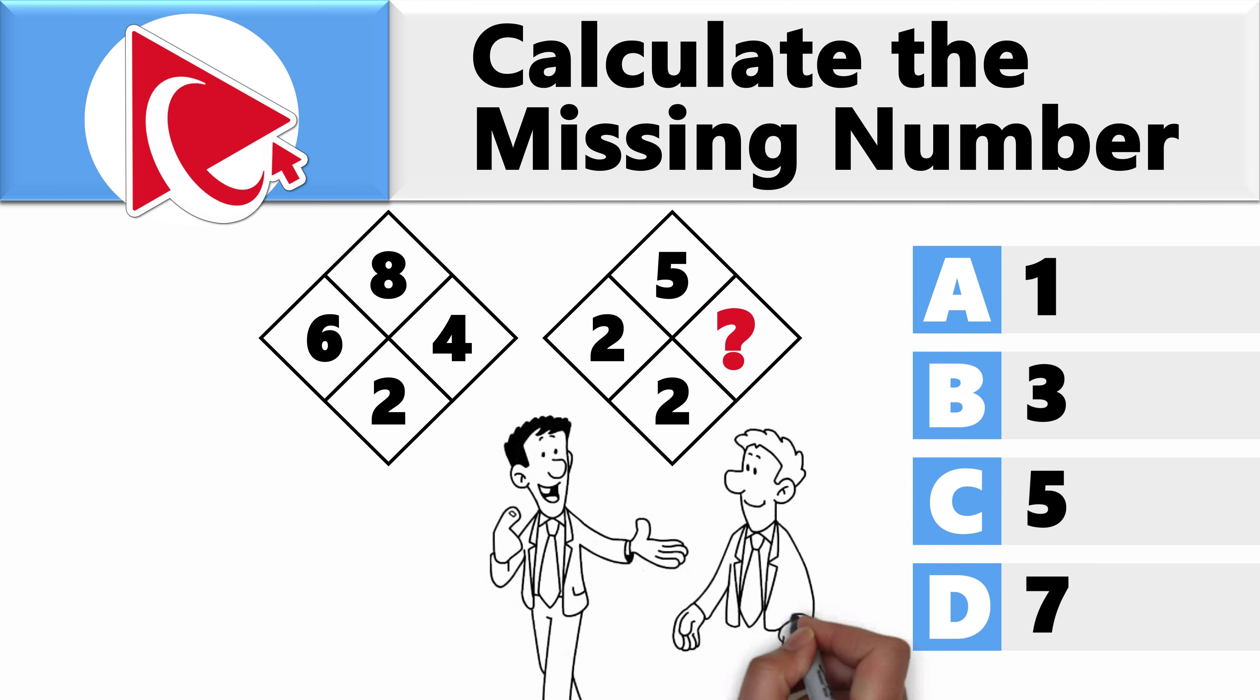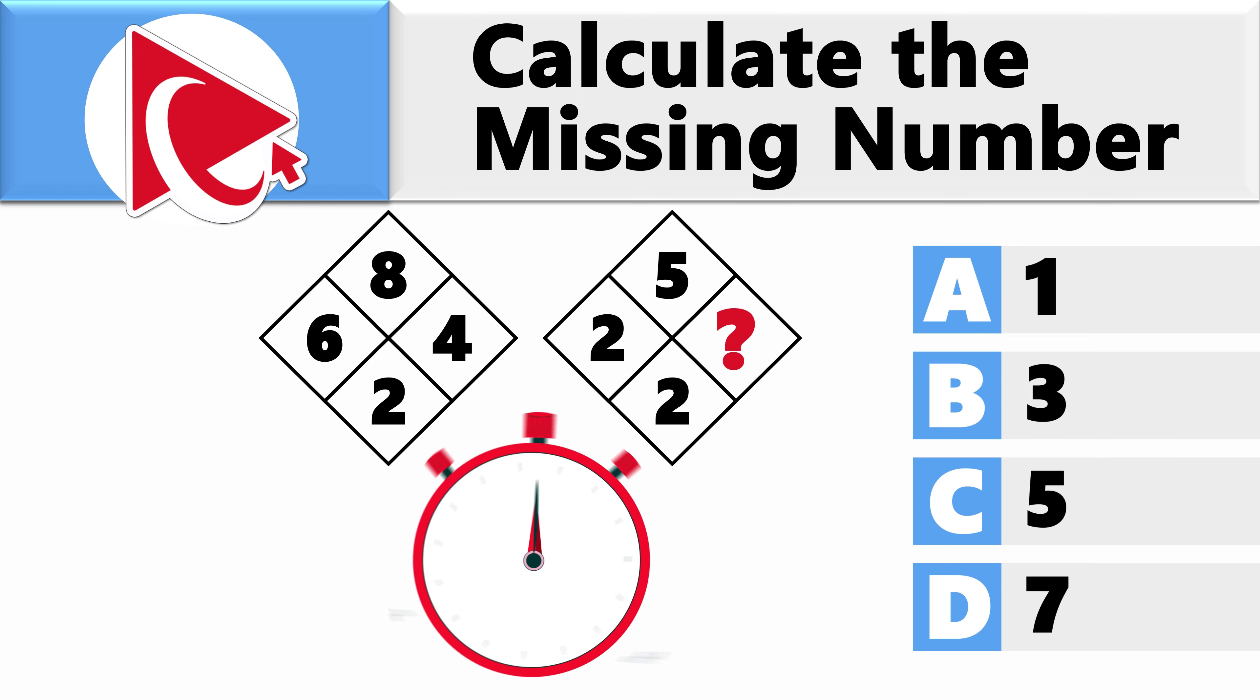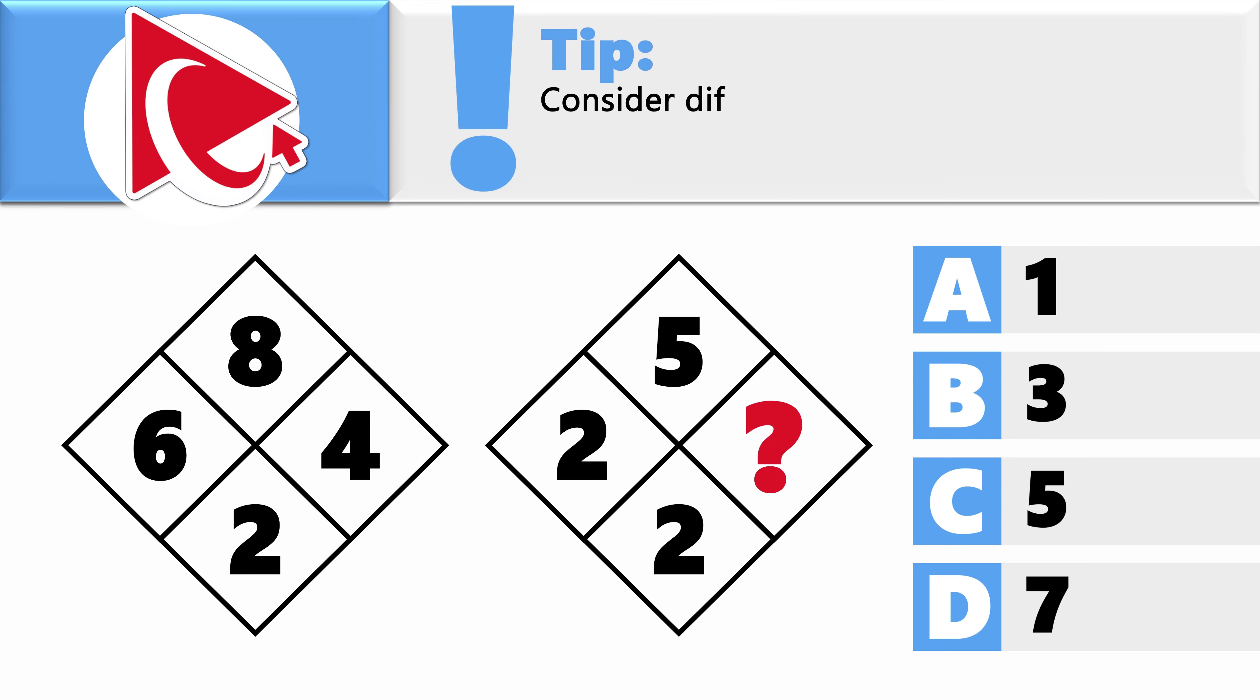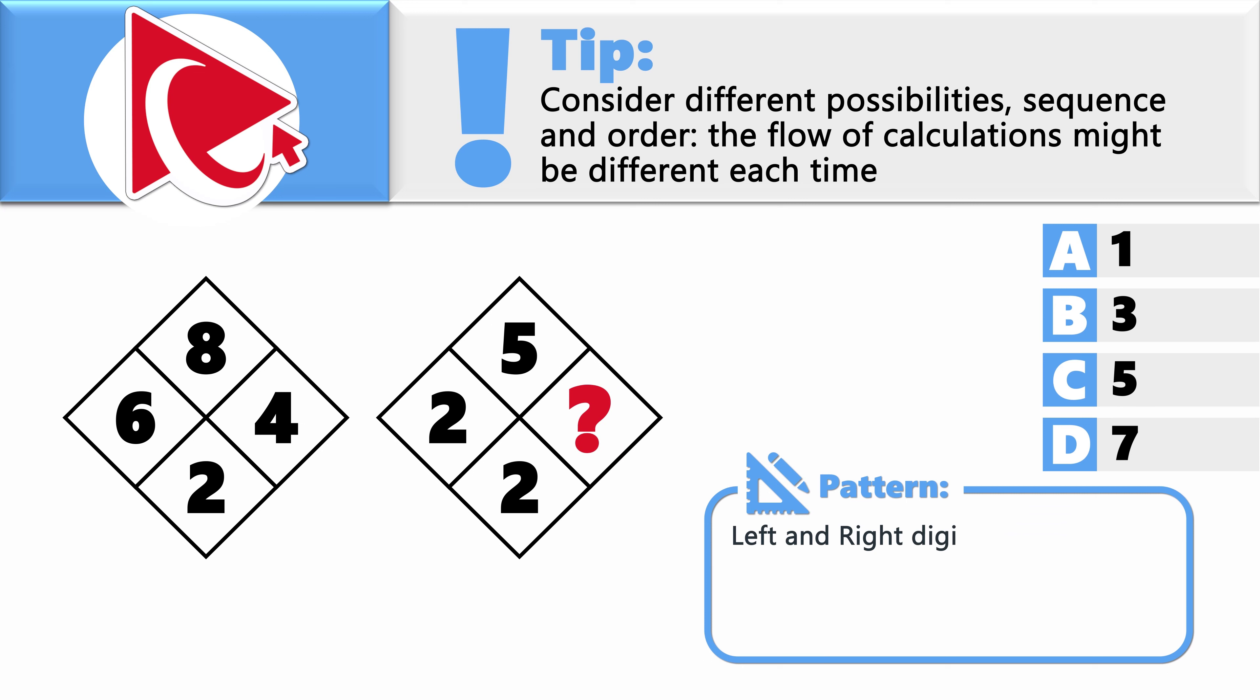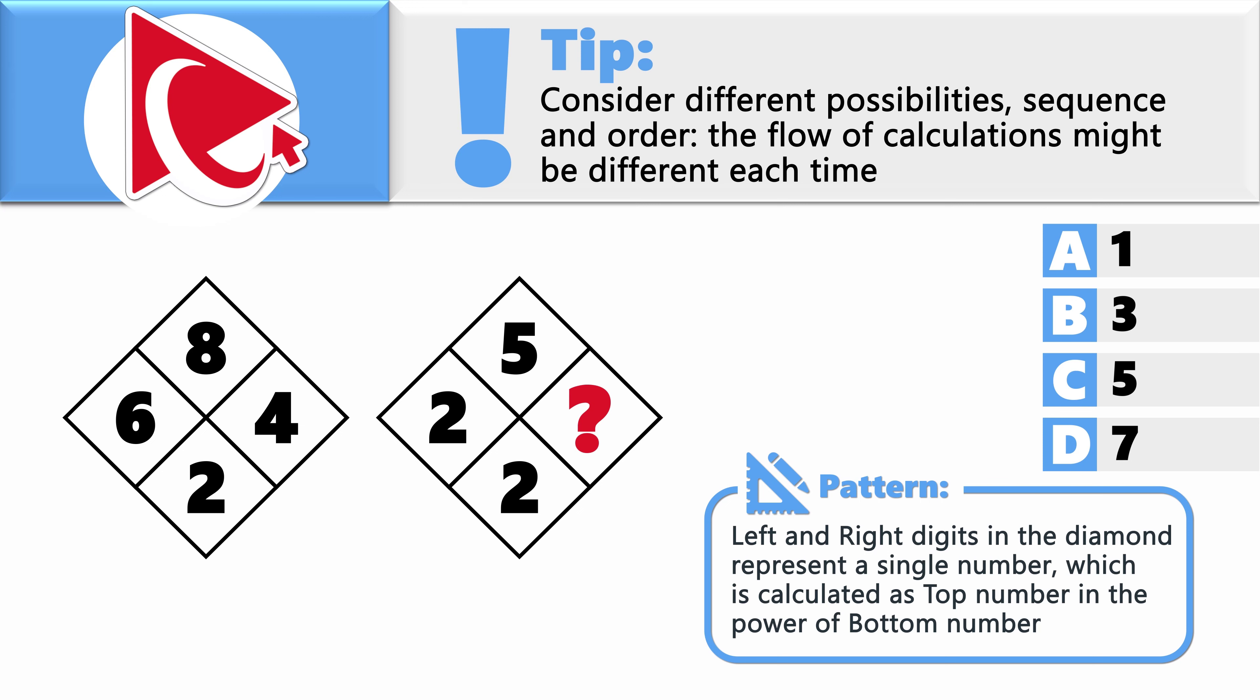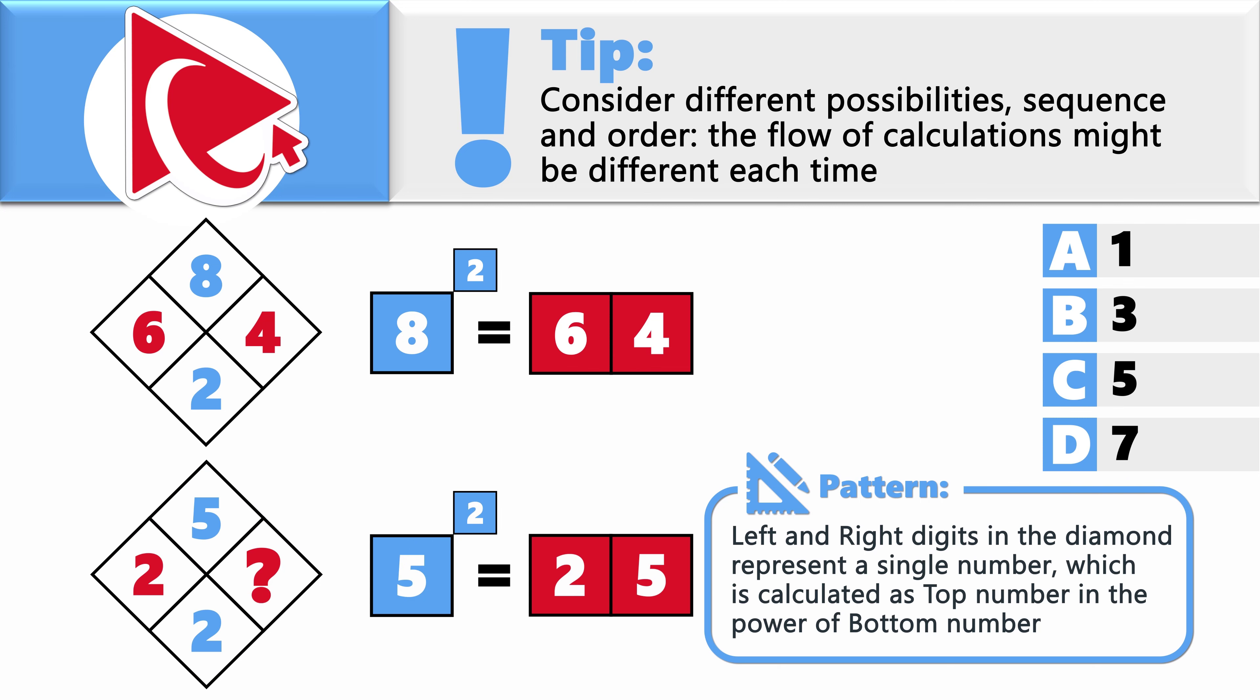Investigate closely and determine if the solution emerges from careful observation. As you might have guessed, the key to solve this challenge is to determine the pattern. The pattern here is that the left and the right digits in the diamond represent a single number, which is calculated as a top number in the power of the bottom number. For example, the top number in the left diamond is 8 and the bottom number is 2. 8 in the power of 2 is 64. Now let's look at the missing value. 5 in the power of 2 is 25. So the correct answer here is choice C, 5.